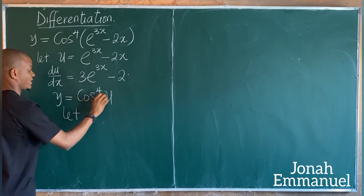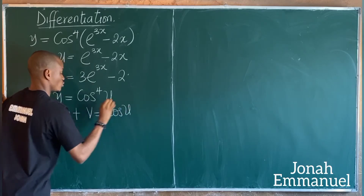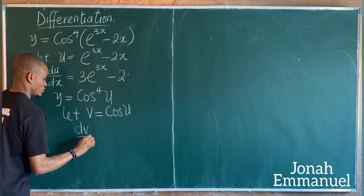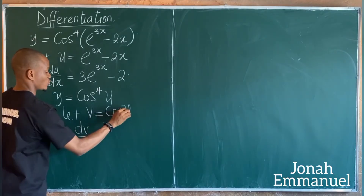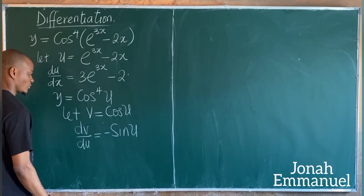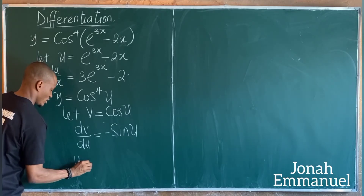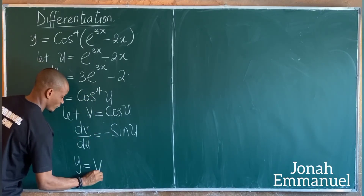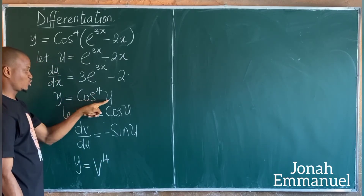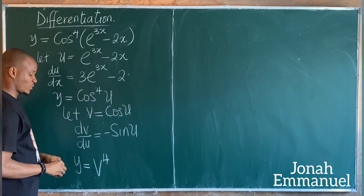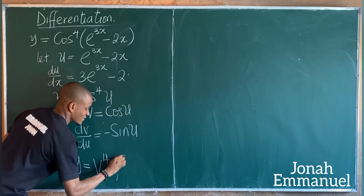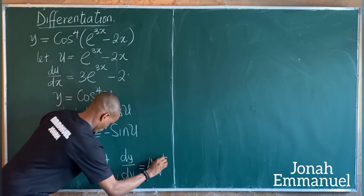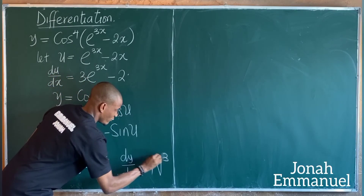This is not simplified, so let v equal cos u. Differentiating v with respect to u gives dv/du equals minus sin u. Now y equals cos u to the power 4, and since cos u is v, y equals v to the power 4.